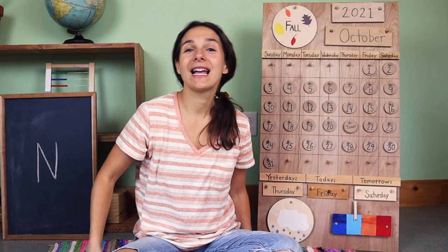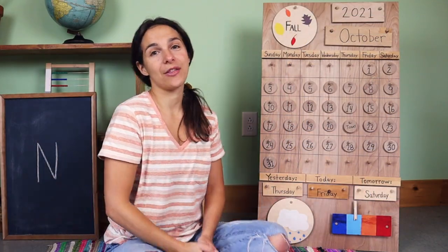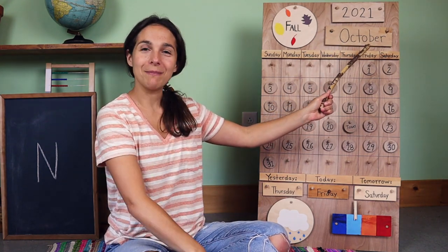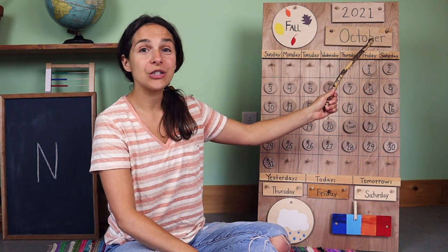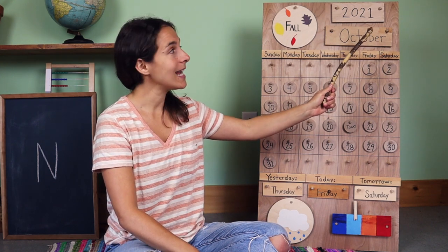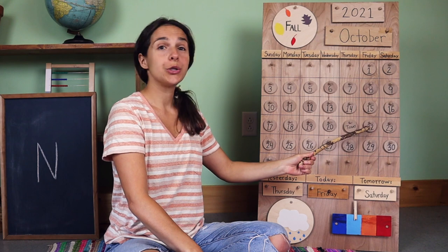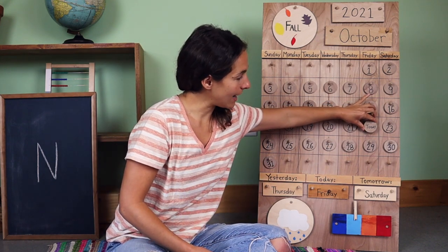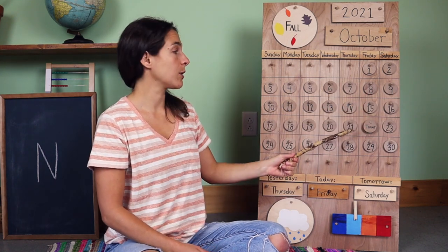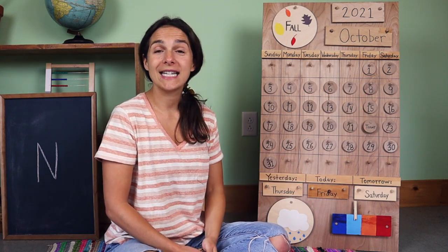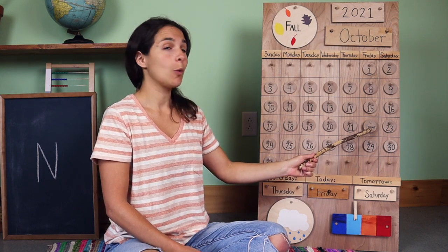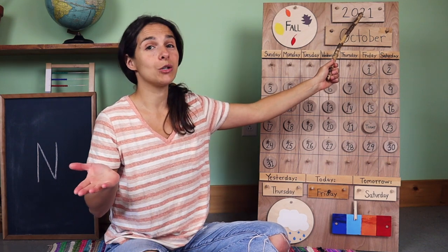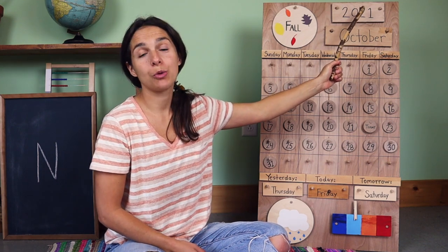Let me grab my pointing stick. Let's go over the date together. Up at the top of the chart, we have the month. Do you know what the month is? October. Today is October 22nd. Let's move the chip over from yesterday. Yesterday was October 21st, and today is October 22nd, and the year is 2021.